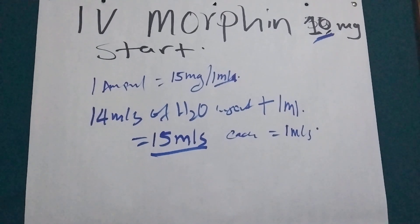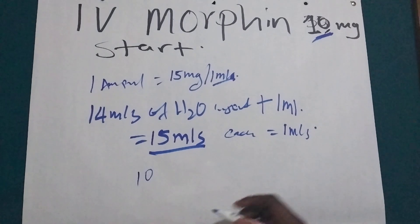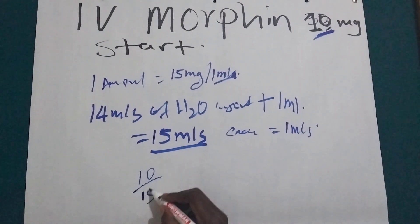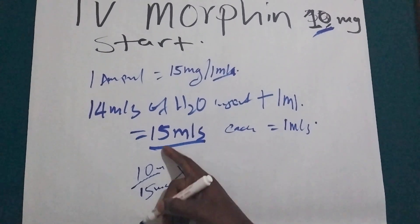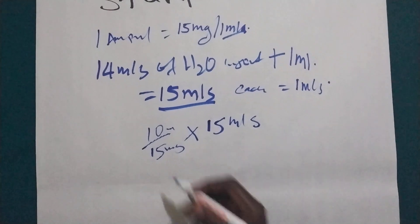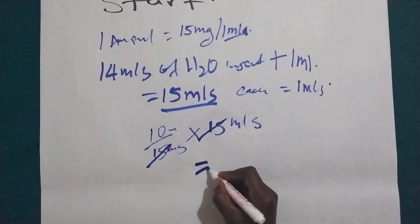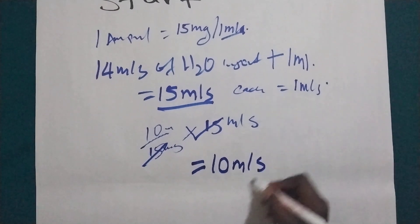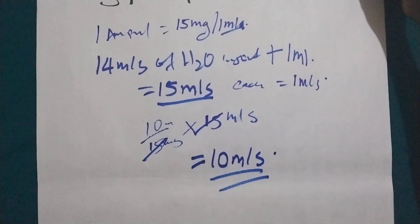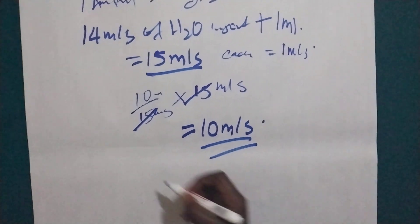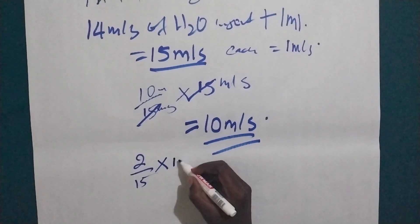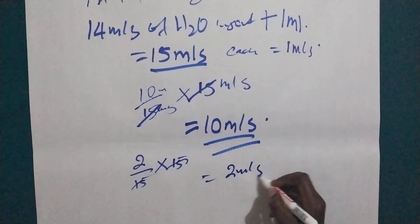The doctor has prescribed 10mg. Using the formula: desired dose over stock dose, multiplied by volume — that is 10 divided by 15, times 15ml — which gives 10ml. Let's reduce the example to 2mg: 2 divided by 15, times 15, gives 2ml to aspirate and administer.